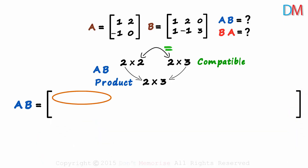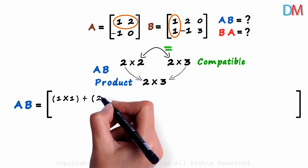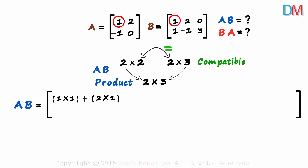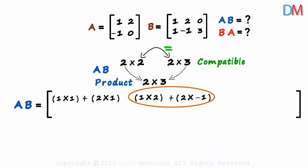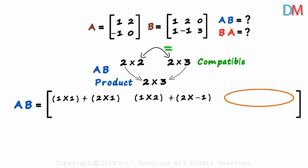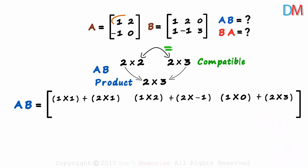The one-one element of the resulting product is the first row of the first matrix multiplied by the first column of the second: one times one plus two times one. For the one-two element, we multiply the first row with the second column: one times two plus two times minus one. For the one-three element, we multiply the first row with the third column: one times zero plus two times three. We are done with the first row — multiplied with each column of the second matrix.